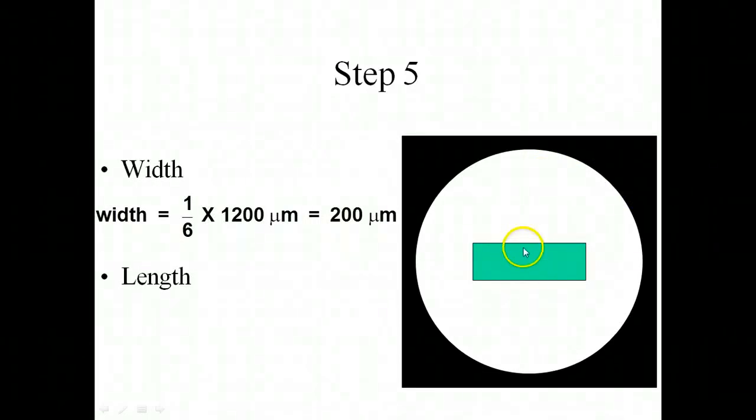Imagine we could stack six of these to take up our whole field of view, which is the diameter of this field of view, and we're going to take one-sixth times 1,200, which would give us an estimated size of this particular object to be 200 micrometers.